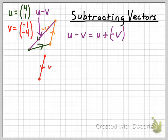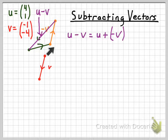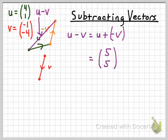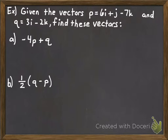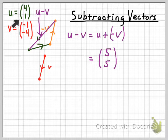What's the column vector form of u minus v? You can see it goes five units to the right and five units up — coincidentally both the same. From the arithmetic standpoint, you simply subtract the horizontal and vertical components of the original two vectors: four minus negative one is five, and one minus negative four also gives you five.